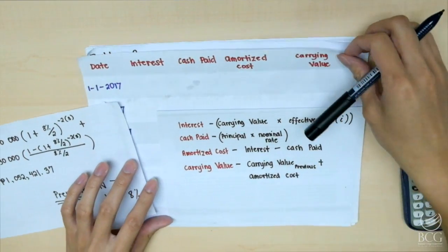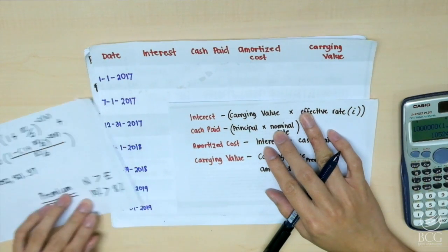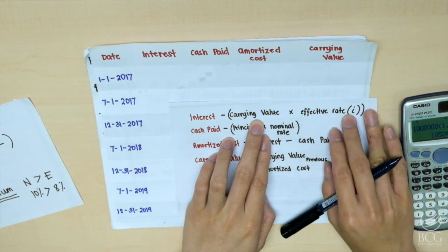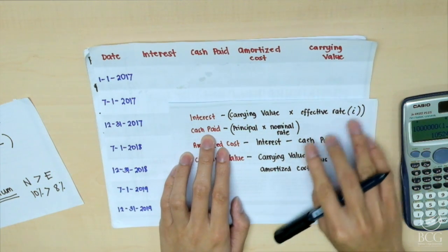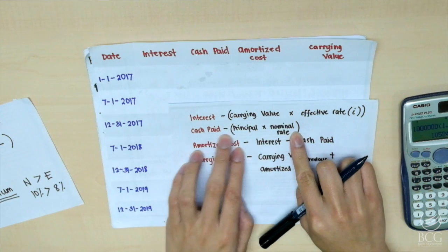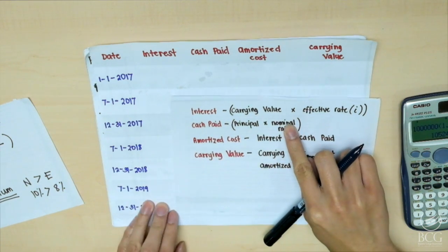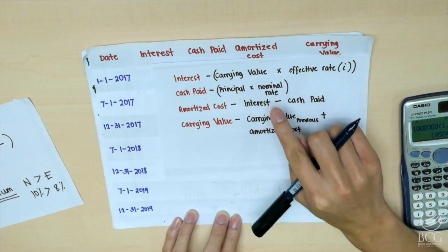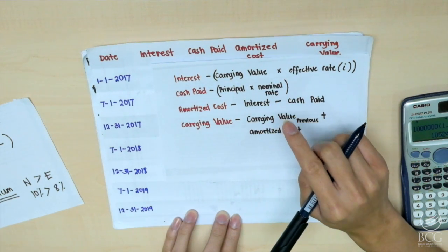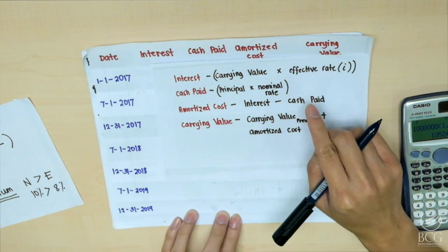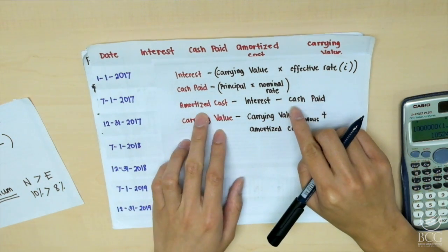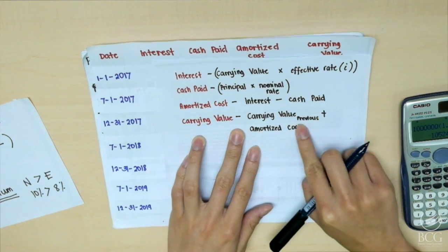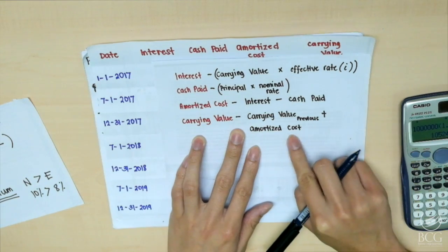As you can recall, these are the formulas for the accounting interest: previous carrying value times the effective rate; cash paid: principal times the nominal rate for the interest. But at the end of the year or at the maturity date, we're going to include the principal as well, since the principal is to be paid at maturity as indicated in the problem. The amortized cost is interest minus cash paid, and the carrying value is the previous carrying value plus the amortized cost.